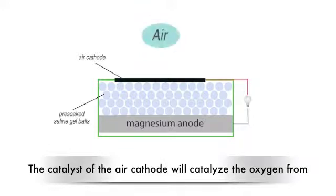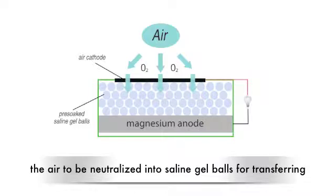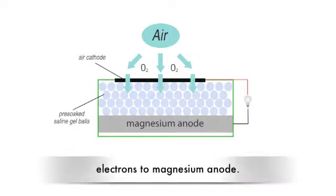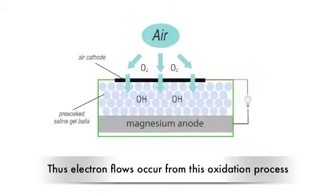The catalyst of the air cathode will catalyze the oxygen from the air to be neutralized into saline gel balls for transferring electrons to the magnesium anode. Thus, electron flows occur from this oxidation process.